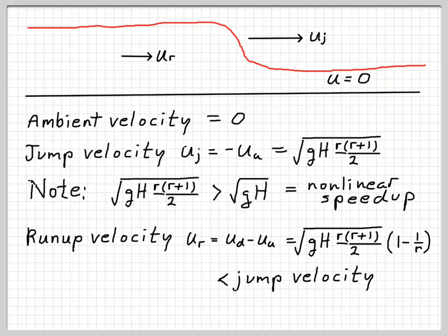We can also calculate the speed of the flow behind the hydraulic jump, and this is the run-up in terms of waves impinging on a beach. The run-up velocity is just Ud minus Uu, the square root GH r times r plus 1 over 2, times 1 minus 1 over r. You notice that this will always be less than the jump velocity. The water behind the wave is moving, but it's not moving as fast as the wave front itself. This differentiates a hydraulic jump from a regular linear wave, because in linear waves, no water actually moves in the direction the wave is going. But in this case, once the wave is broken, it's actually carrying water with it, moving at the run-up velocity, but the wave is traveling faster than the water behind it.